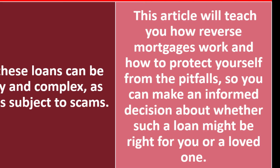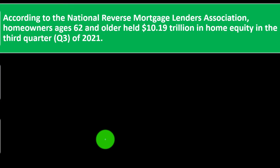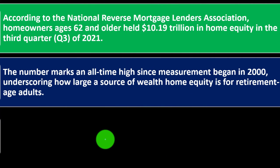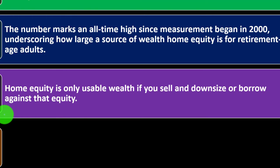This article will teach you how reverse mortgages work and how to protect yourself from the pitfalls so you can make an informed decision about whether such a loan might be right for you or a loved one. According to the National Reverse Mortgage Lenders Association, homeowners ages 62 and older held $10.19 trillion in home equity in the third quarter of 2021 — an all-time high since measurement began in 2000. Home equity is only usable wealth if you sell, downsize, or borrow against that equity.